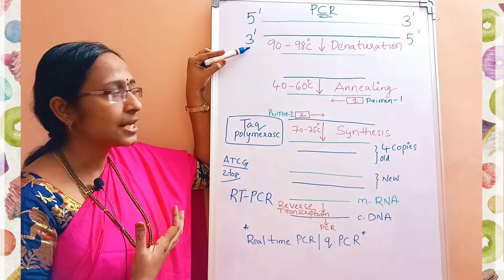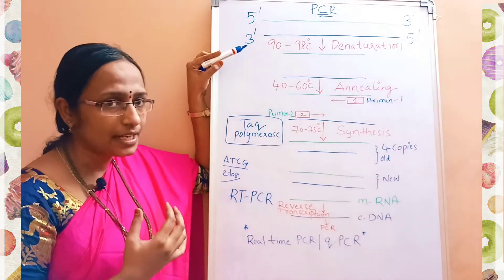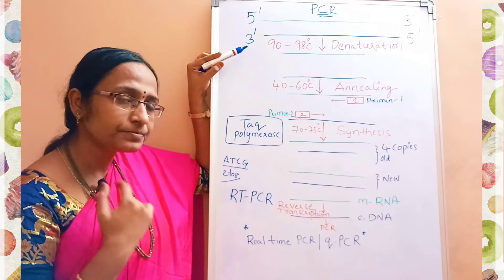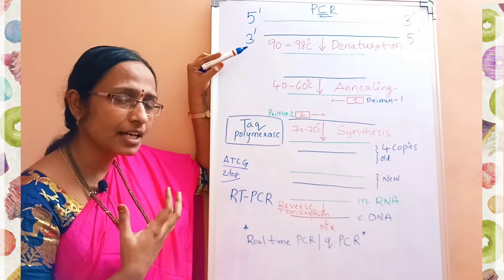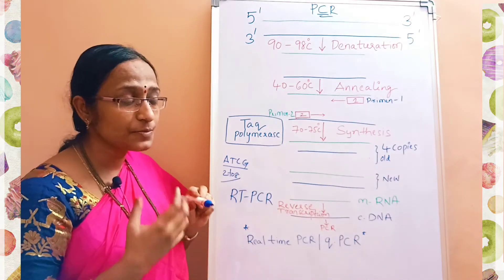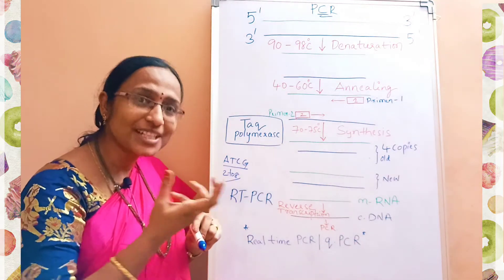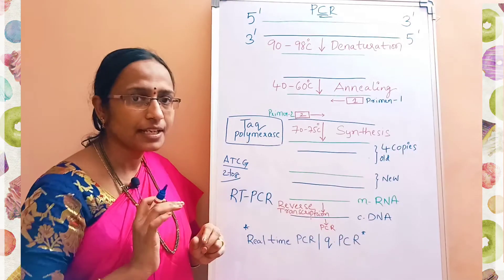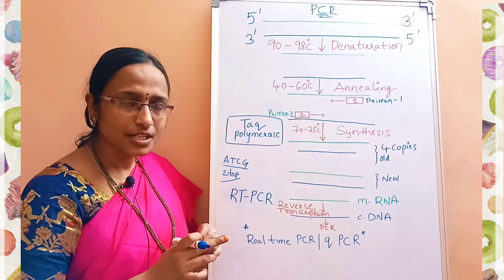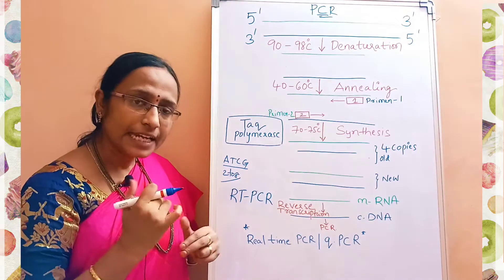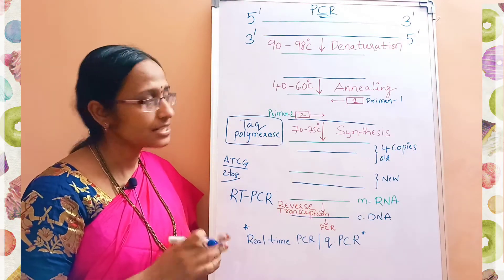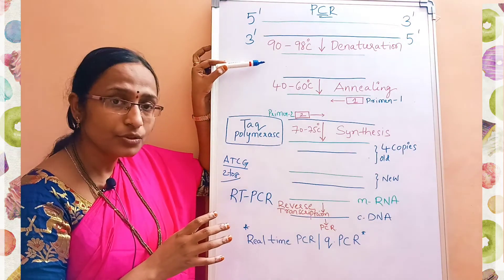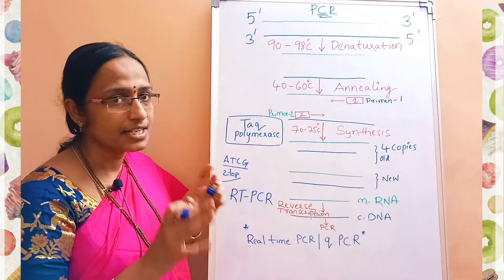This separation of the DNA double helix into two single-stranded DNAs is called denaturation. Denaturation occurs at a temperature of 90 to 98 degrees centigrade. When discussing PCR you must mention the temperatures, because every step is specific to a particular temperature.